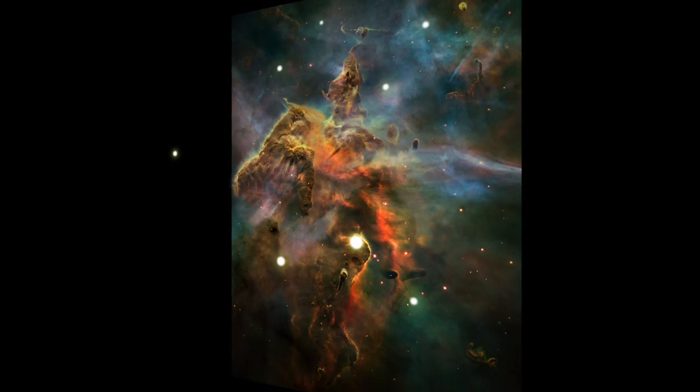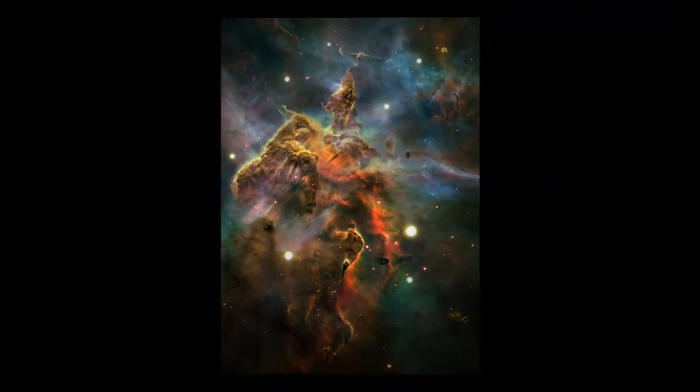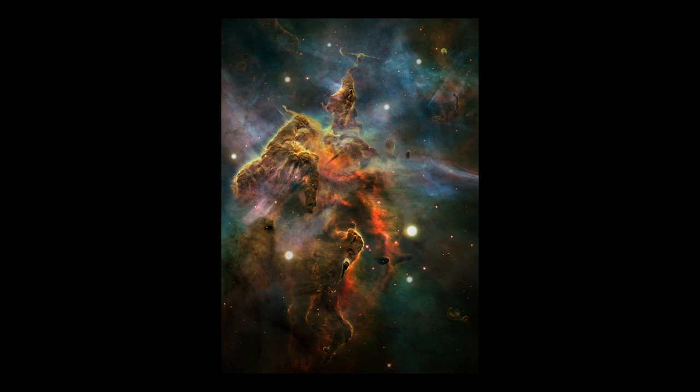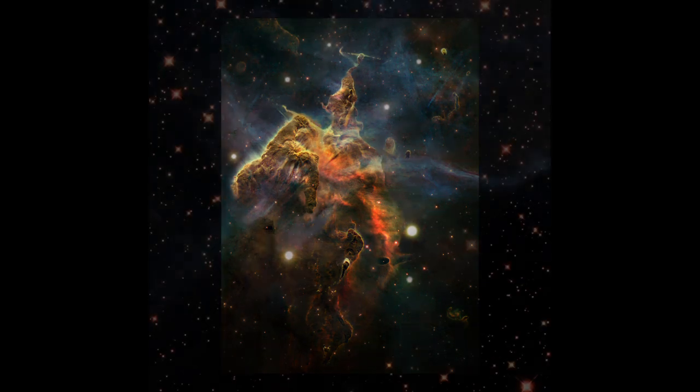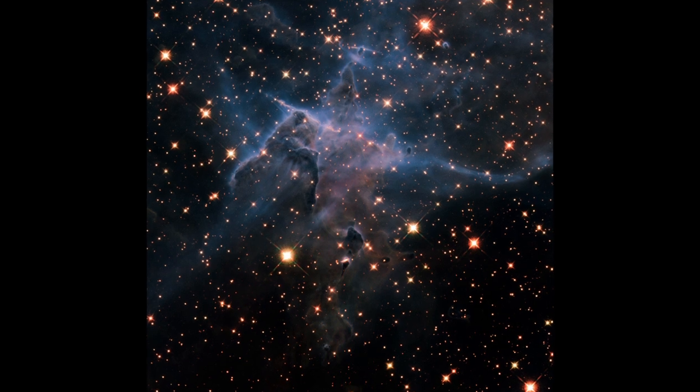The dust is so thick we can't see the infant stars inside, at least not with visible light. With infrared light, Hubble can see through all but the thickest dust. Yet it's in those dense knots that the youngest stars are forming.